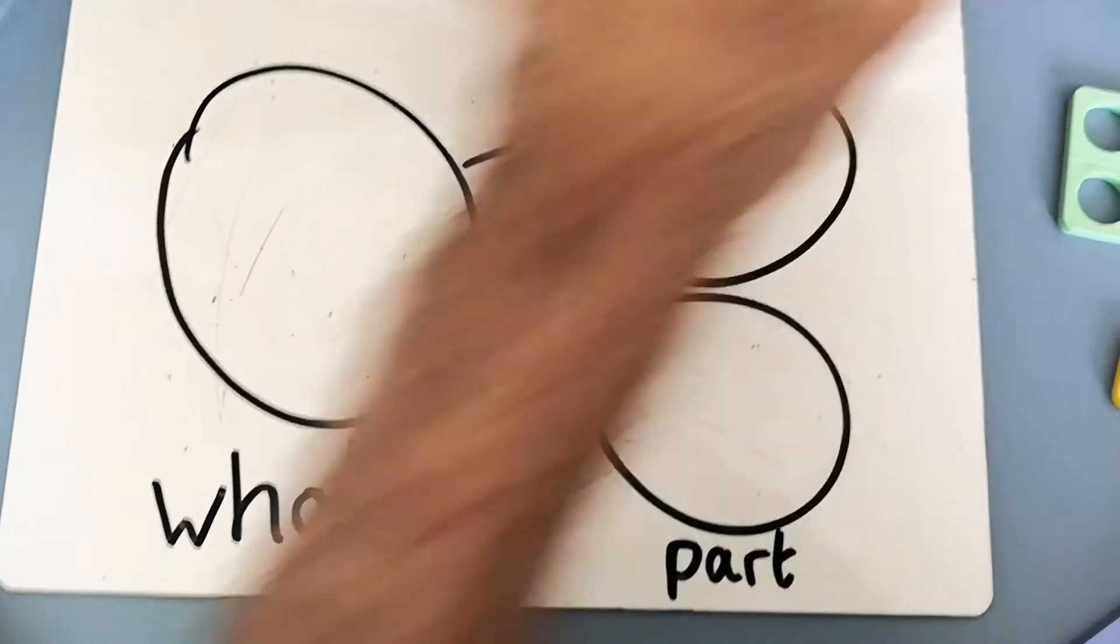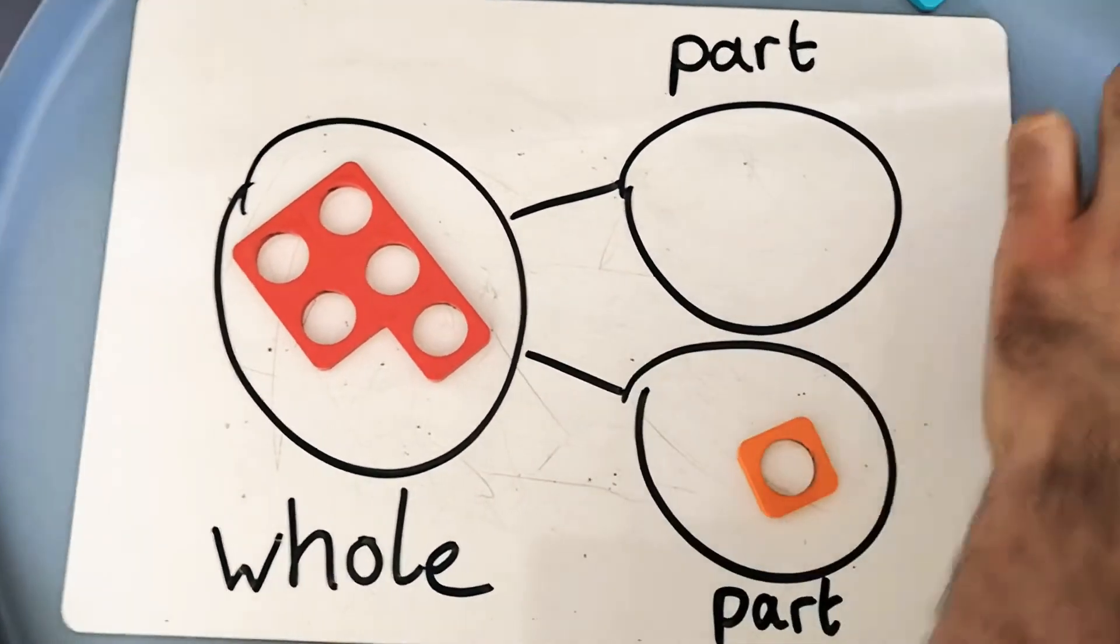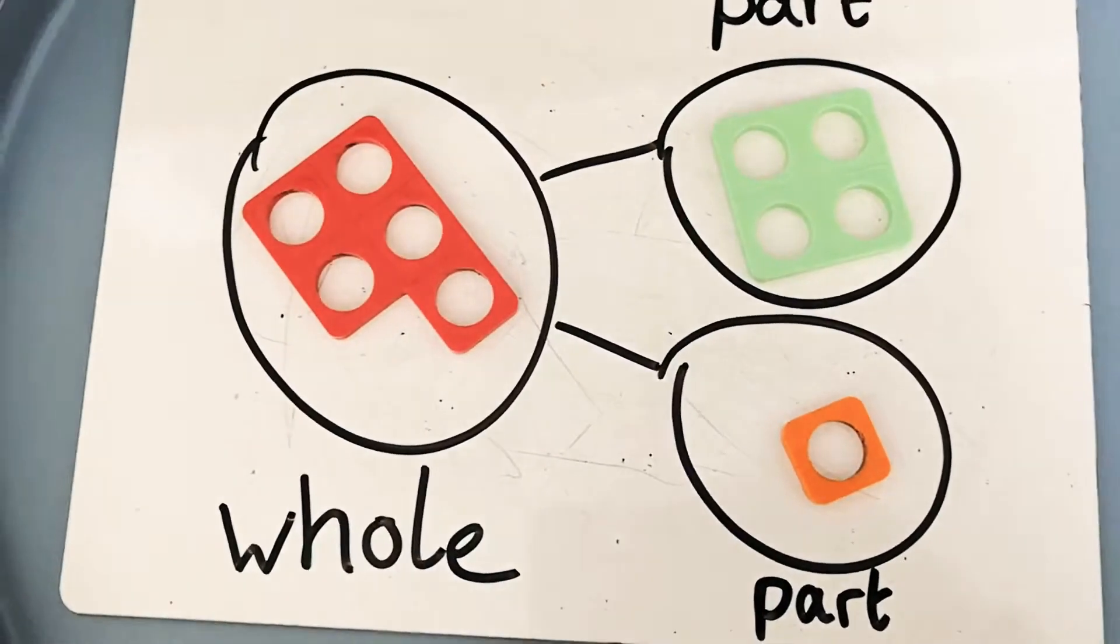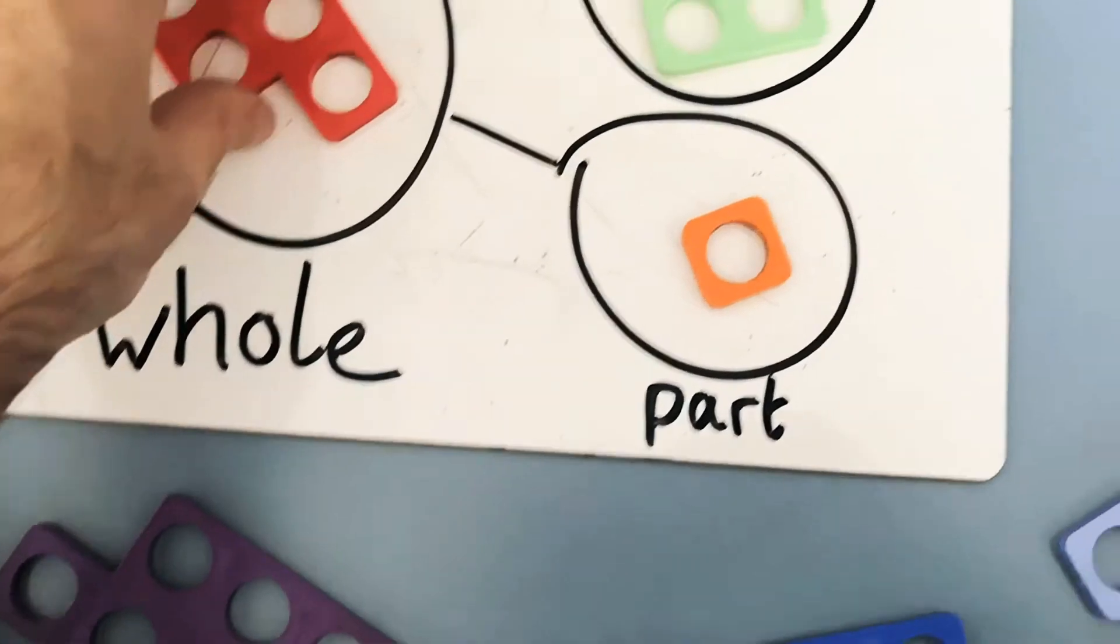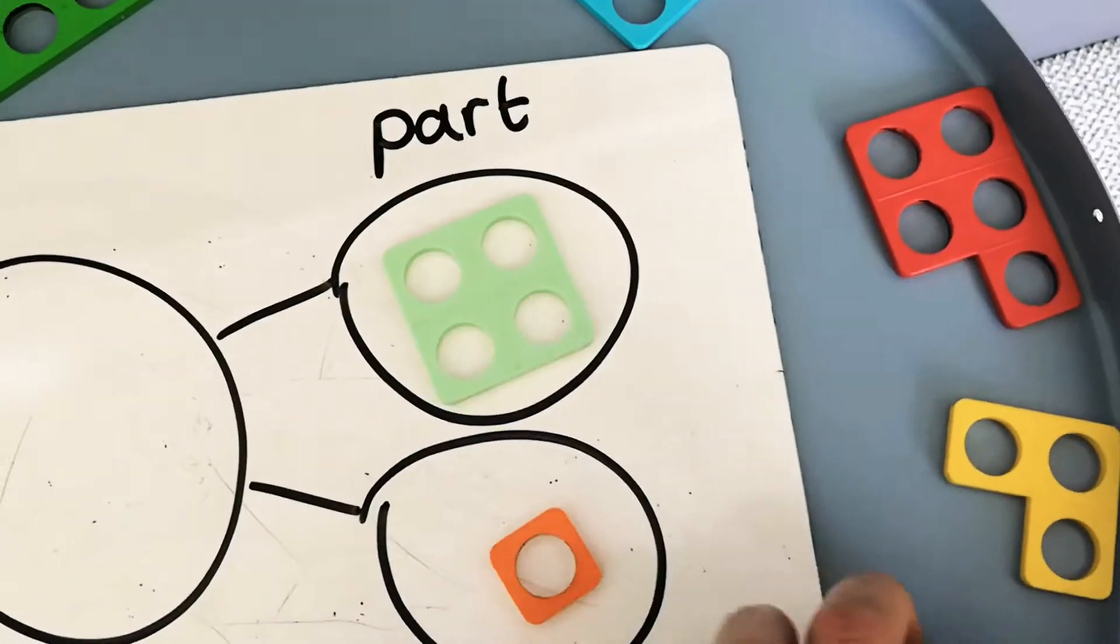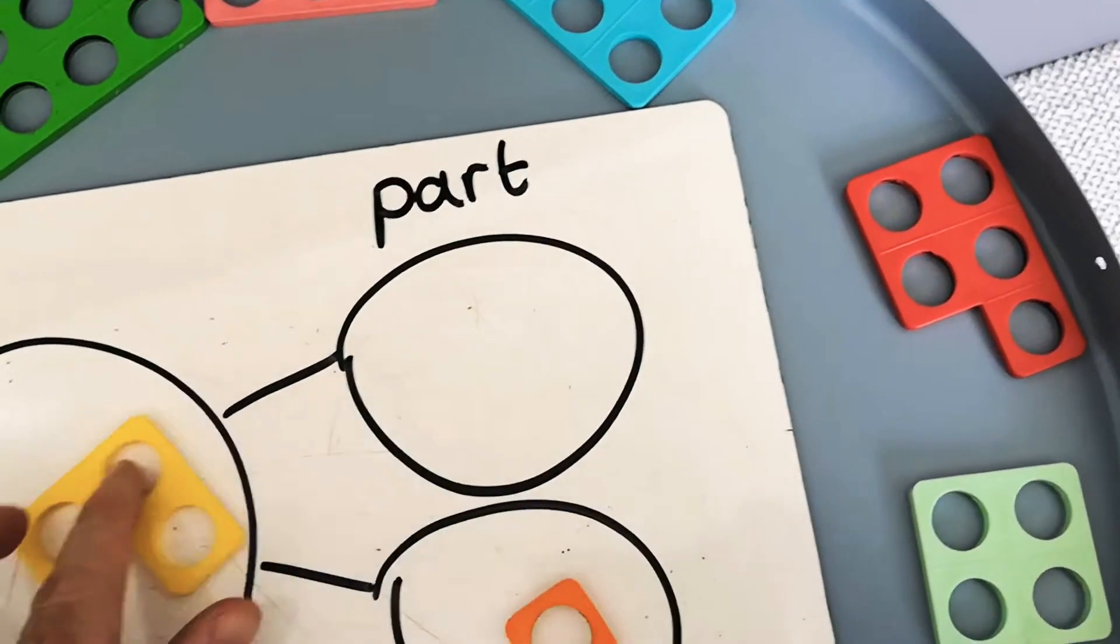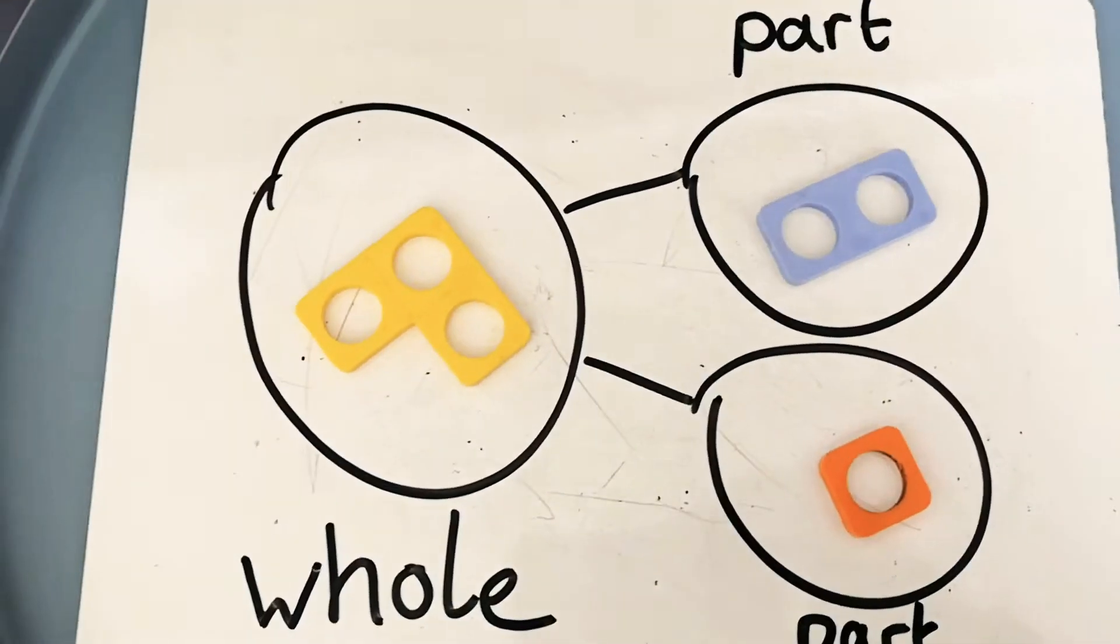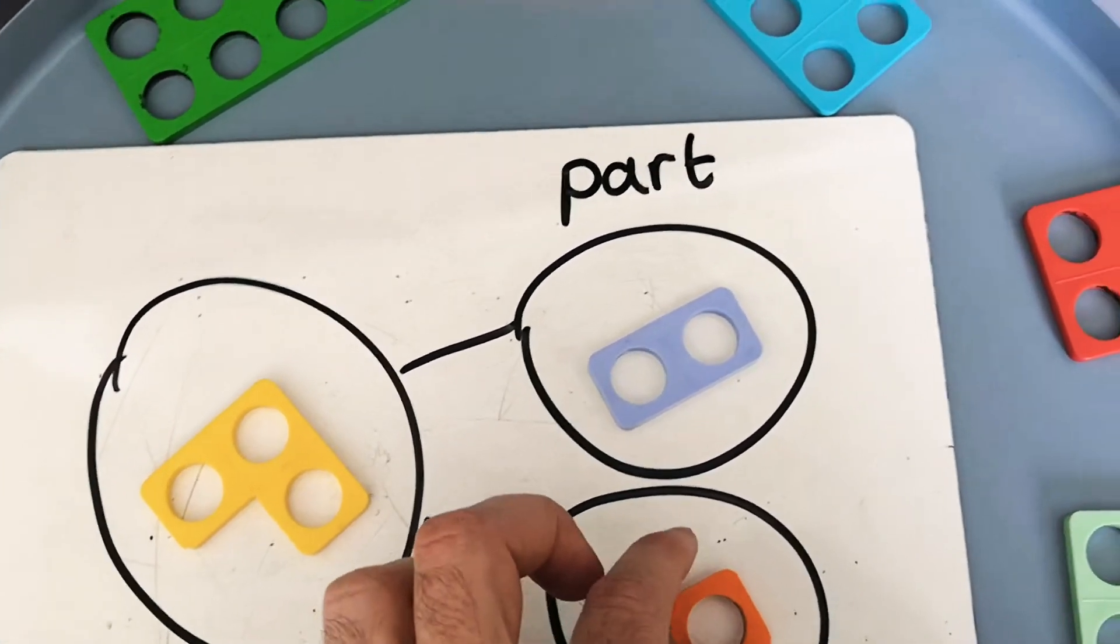So for example, if I had 5 as my whole, my parts could be 1 and 4 because 1 plus 4 is equal to 5. If I had 3 as my whole, I might have 1 and 2 as my parts because 2 plus 1 is equal to 3.